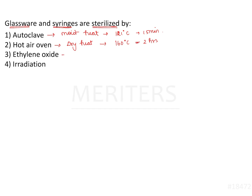Option three is ethylene oxide. It is a gas — actually a volatile liquid with a very low boiling point of about 10.7 degrees Celsius. It is a highly inflammable gas, which is a very important point to know regarding ethylene oxide.